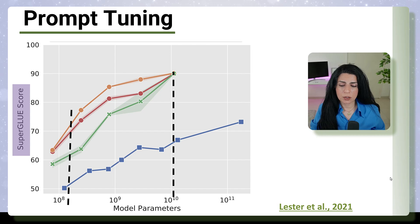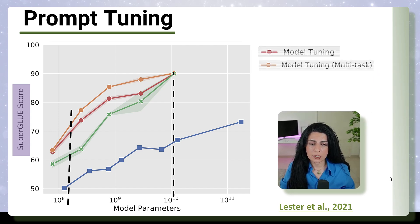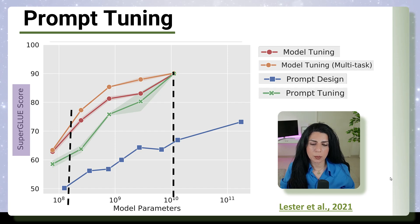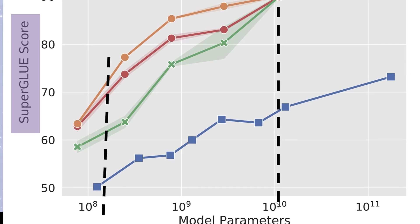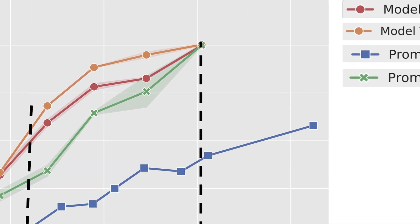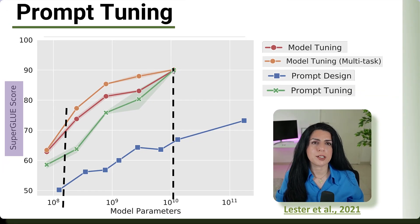If you look at this result, what we can see is that the red and orange are the model tuning and model tuning, which is fine-tuning with the multitask. The green one is prompt tuning and blue one is the prompt design or prompt engineering. We can see that if the model is small, then we basically have better results with fine-tuning. But as soon as our model becomes a little bit bigger, the number of parameters is higher, then the prompt tuning is the same as fine-tuning, which is really great.